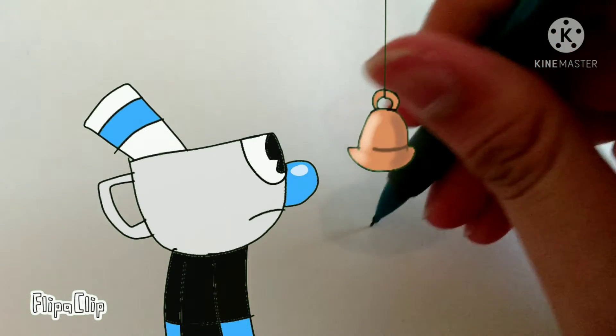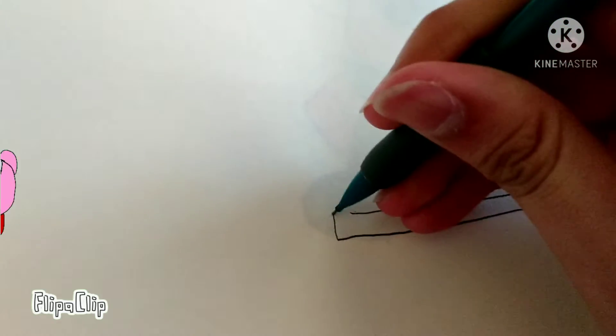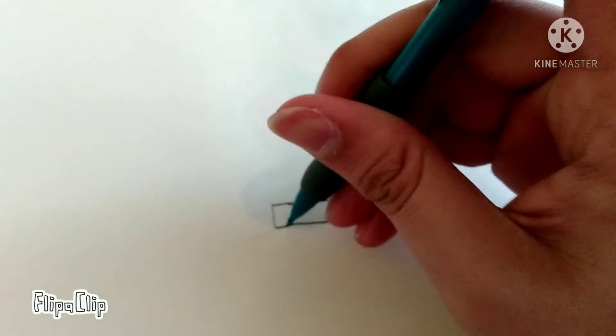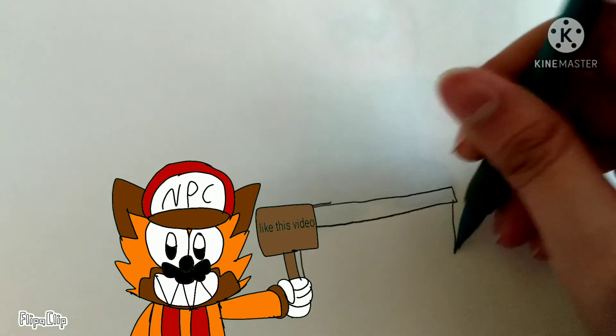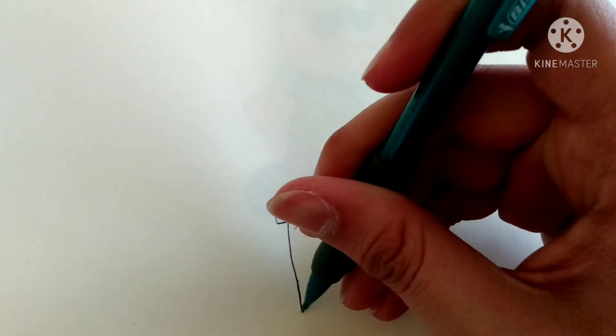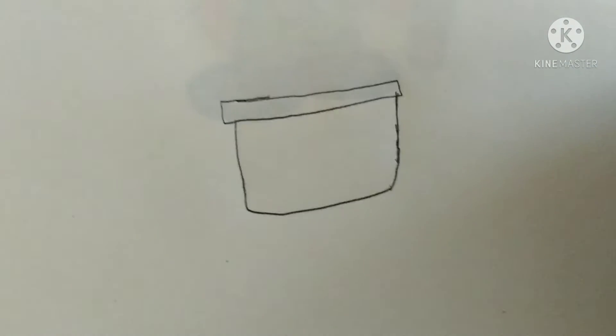First, I'll draw his pot. There we go. A large rectangle. Then, I just drew it like this. Yep, kind of shaped like a pot.